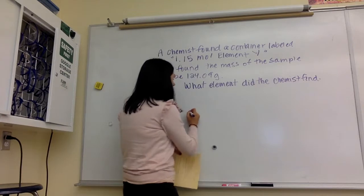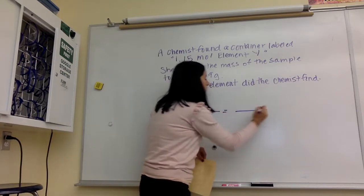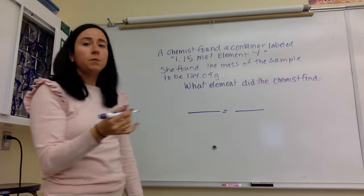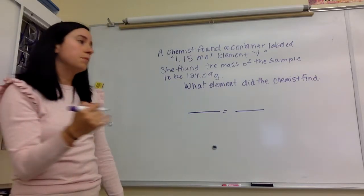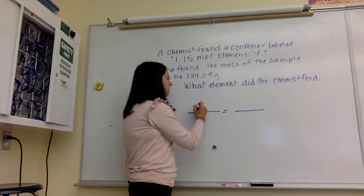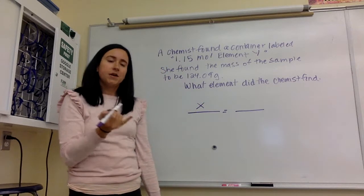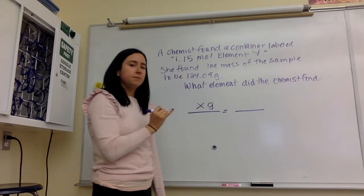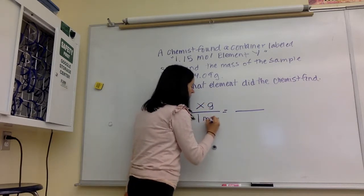So one thing we want to do when we're setting up these proportions is just remember what is the unit for measuring molar mass. Well, the unit for molar mass is grams per one mole. So even though in this case I don't know what the molar mass is, I know it's x, I do know that the unit for molar mass is grams over one mole.